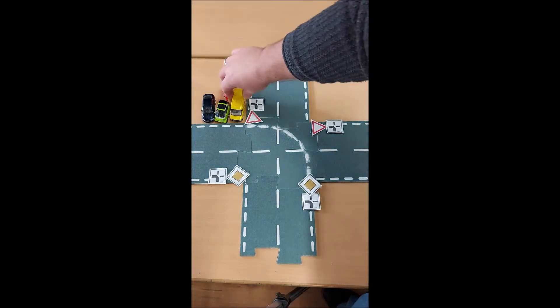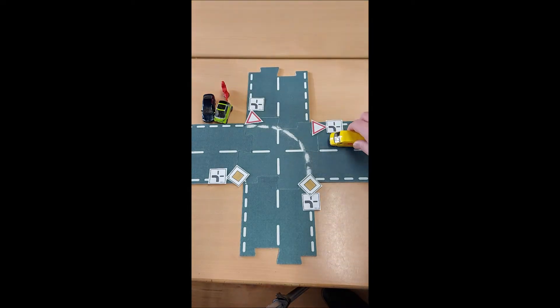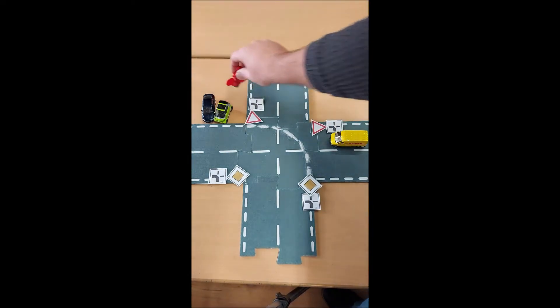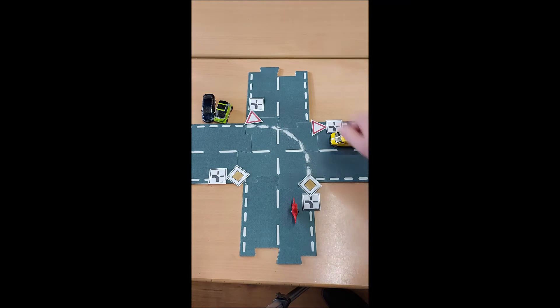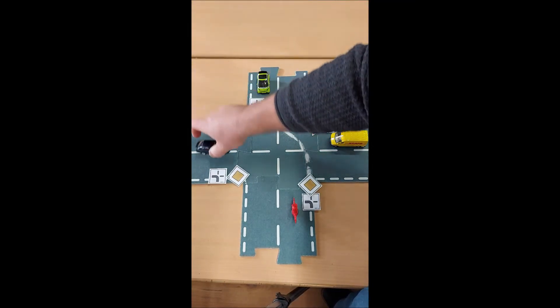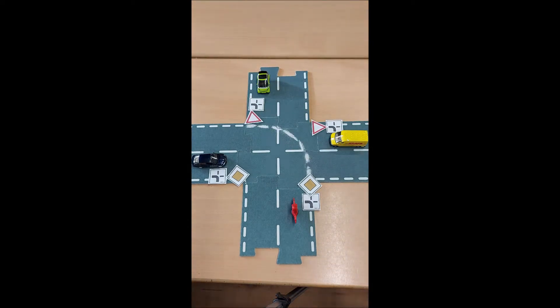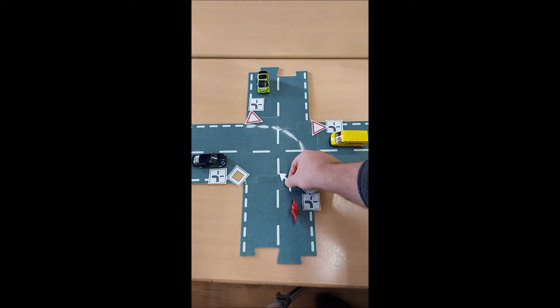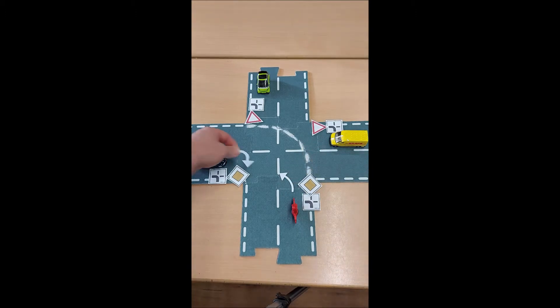Jetzt müssen wir noch die Fahrzeuge verteilen. Das Postauto kommt mal von hier. Du als Fahrradfahrer kommst von hier. Der kleine hier kommt von da. Und das Warzenauto von da. Und jetzt müssen wir noch klären, wer wohin fahren will. Also, tun wir mal so, als wenn der Fahrradfahrer nach links fahren möchte. Und der Autofahrer nach rechts. Alle anderen fahren geradeaus. Wer darf jetzt als erstes?